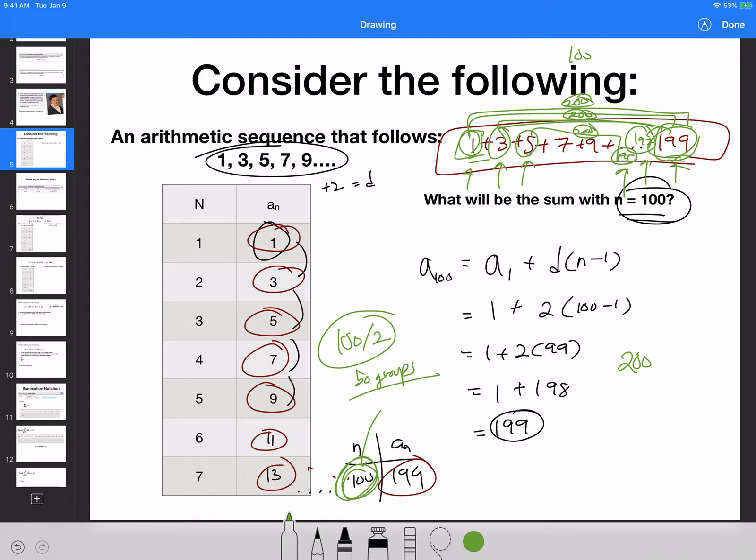So if I take this 200 and multiply it by 50, because that's how many partners, that's how many groups of 200 I'm going to get, my final answer is going to be 10,000. And if you were crazy enough to actually type this up all the way down to 199 and add up all those numbers, you will end up with 10,000 for your total sum.